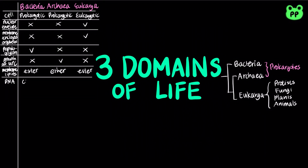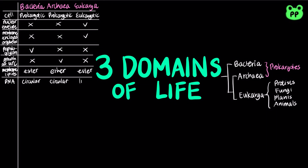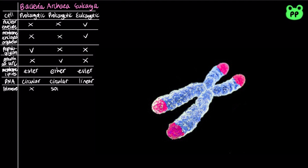Both bacteria and archaea have circular chromosomes, whereas eukaryotes have linear chromosomes. However, archaea resembles eukaryotes in many aspects of molecular biology. Bacterial chromosomes don't have telomeres, whereas some archaea have telomeres, which are repetitive sequences at the end of chromosomes that act as buffers against progressive shortening of DNA during replication.